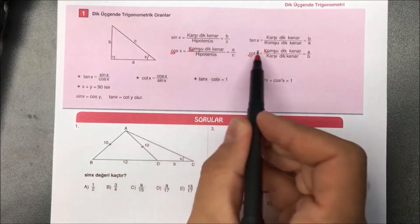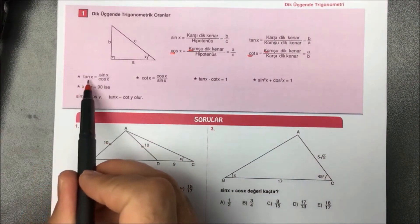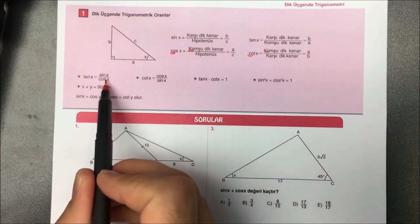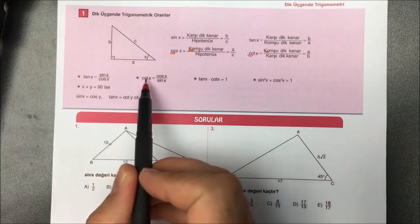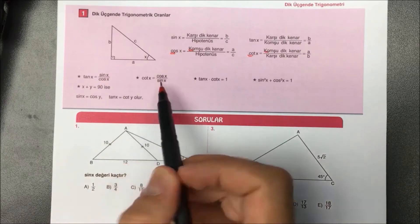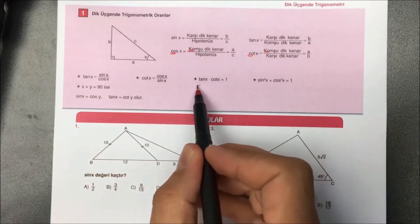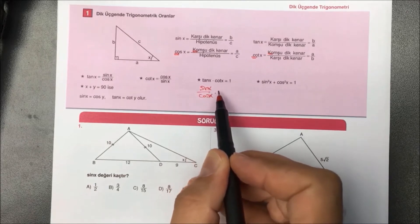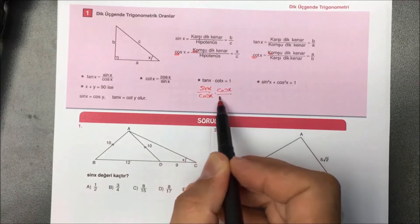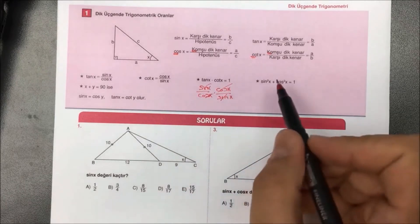Ko ile başlayanların üst tarafında komşu başladığını söyleyebiliriz. Bize verilen trigonometrik ifadelerde tanjant yerine sin bölü cos yazacağız, kotanjant gördüğümüz yere cos bölü sin yazacağız. tan(x) çarpı cot(x) ifadesinde, tanjant sin/cos, kotanjant cos/sin olduğundan, sağ tarafı düzenleyince yanıt 1 olarak bulunur.